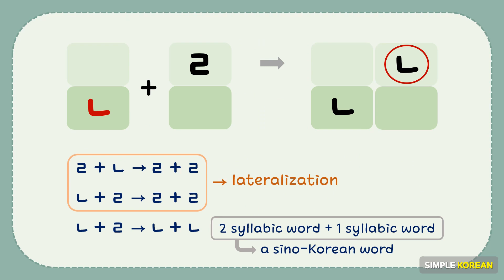After ㄴ, ㄹ changes to ㄴ. It's opposite of lateralization. ㄹ and ㄴ is always ㄹ and ㄴ. And within a word ㄹ and ㄴ becomes ㄹ and ㄴ as well.